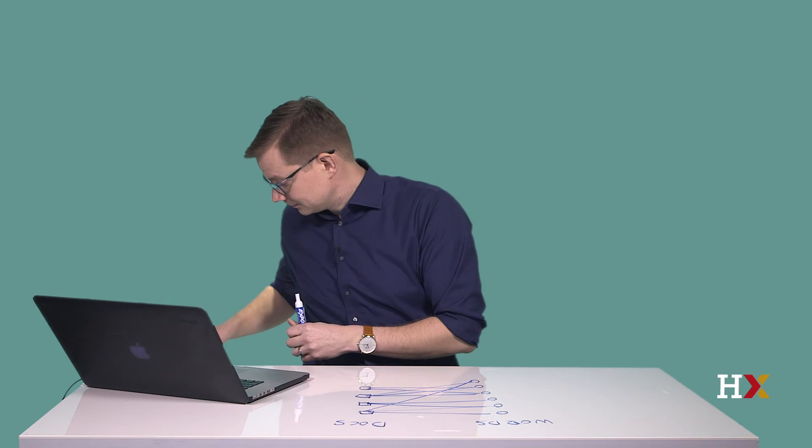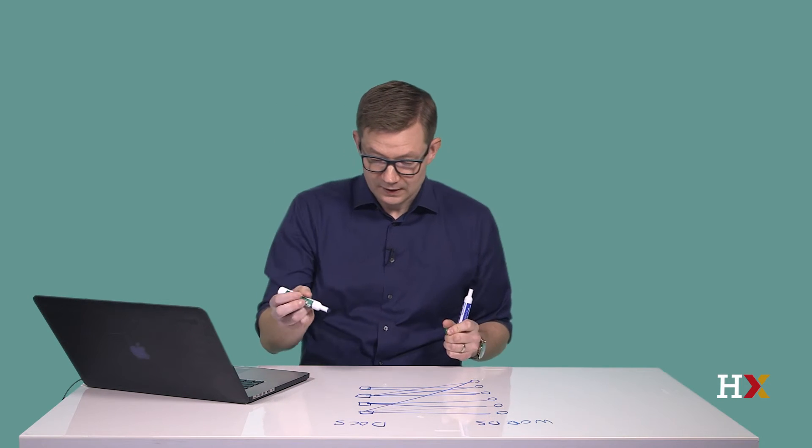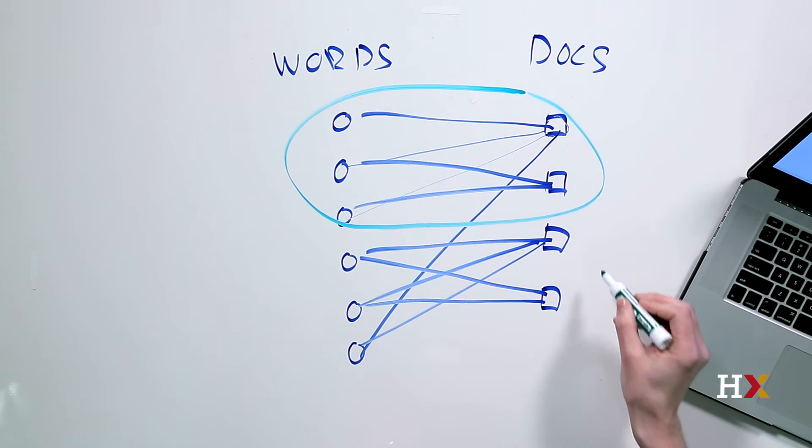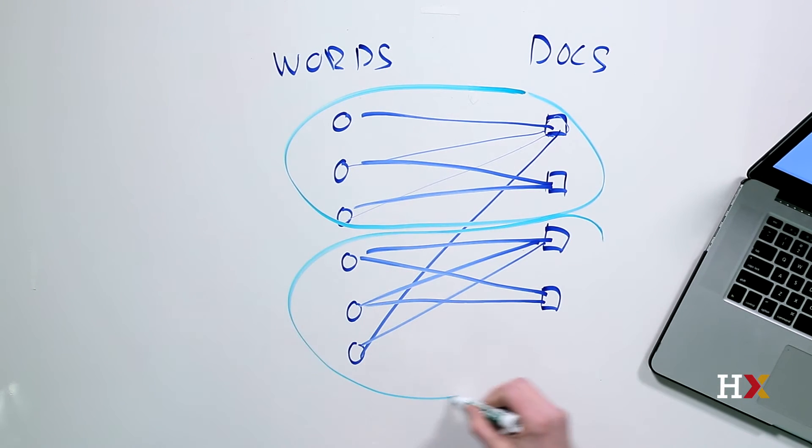In this example, the clusters might be this group over here, and the second cluster might be this group over here. So again, each cluster consists of both words and documents.